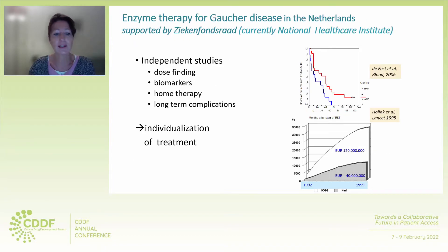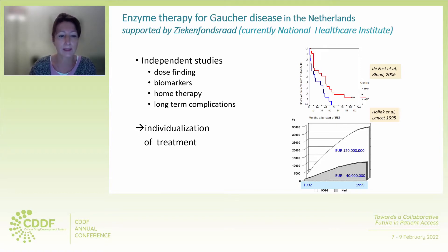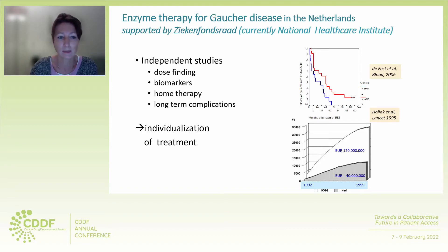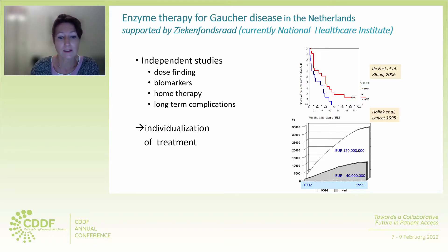We were very fortunate in the 1990s to receive some public funding from the Ziekenfondraad — which is currently the National Healthcare Institute — to do studies on biomarkers and long-term complications for Gaucher disease, where we could establish that individualization of treatment is quite possible. And it's not just possible; it also is very effective and it saves a lot of money.